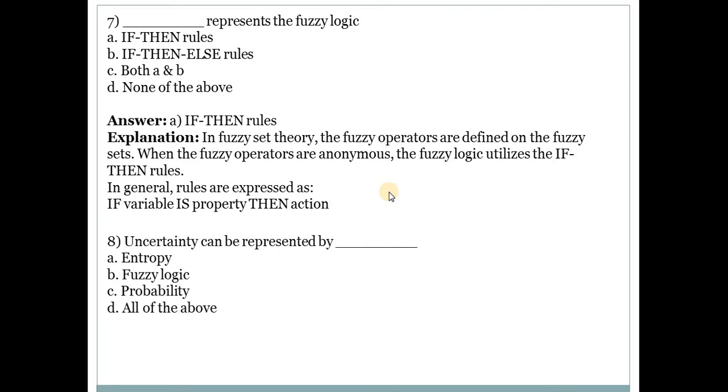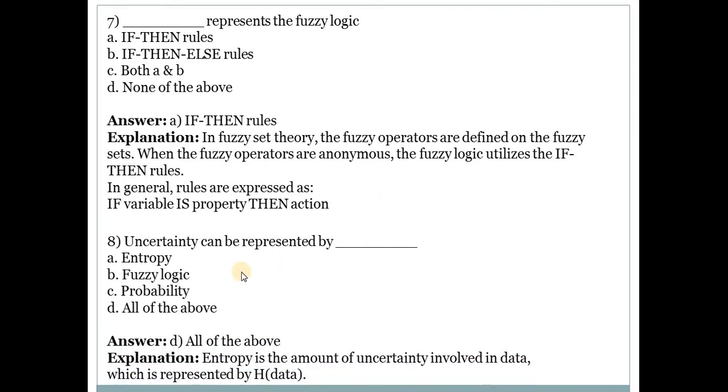Next question is: Uncertainty can be represented by... Answer is D, all of the above. So all of the above represents uncertainty in fuzzy.